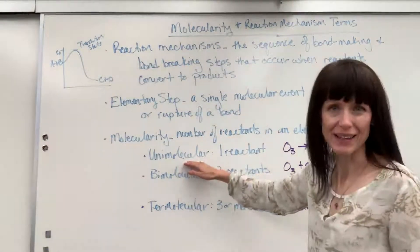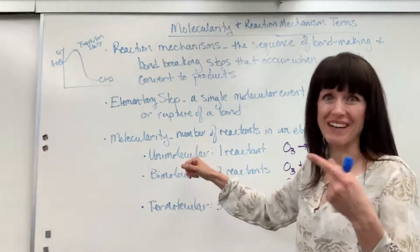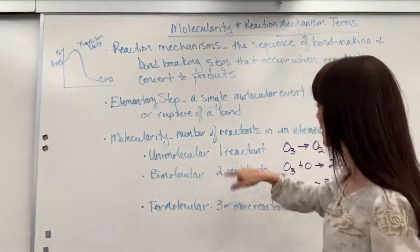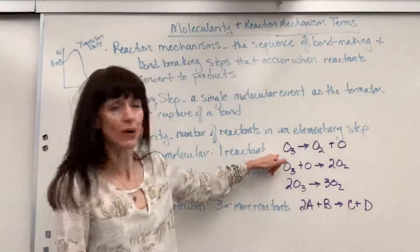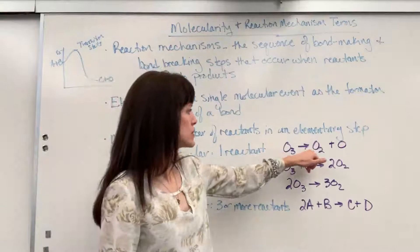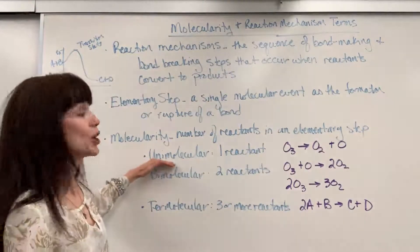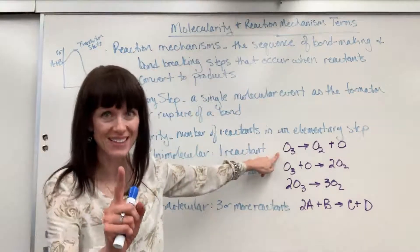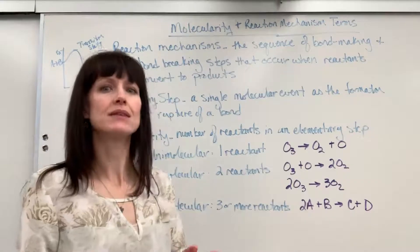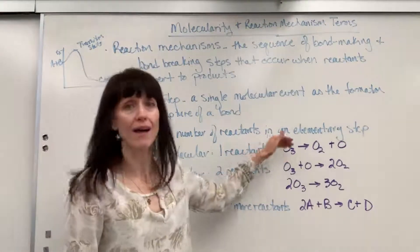We have what's called unimolecular, like a unicycle, a bicycle with one wheel. Unimolecular means that you have one reactant. Here's an example. We have ozone, O3, and it's going to decompose into O2 and O. That would be an elementary step, specifically unimolecular, because there is one reactant. Rate totally depends on the reactants. So one reactant, that is a unimolecular elementary step.